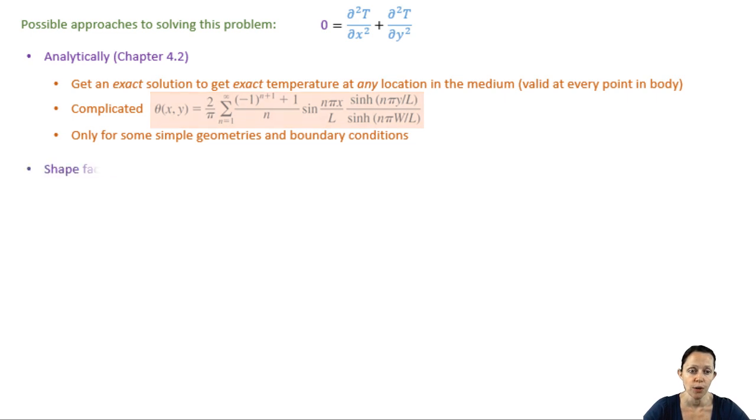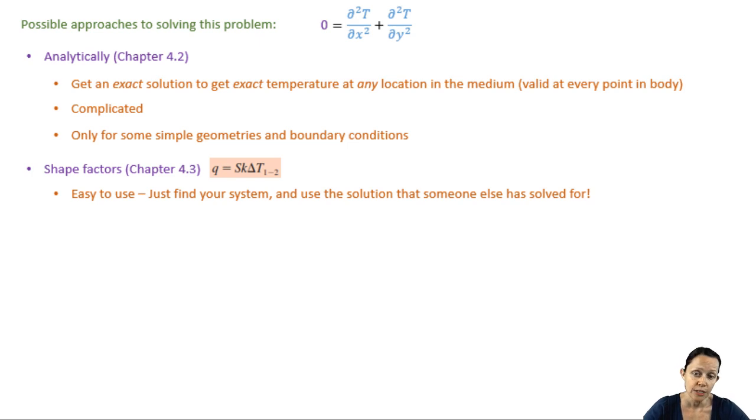Then we'll move on to shape factors. These are super simple to use. Essentially, if there is some common type of system or configuration, someone else has probably already solved for how to calculate for the heat transfer rate, which is related to the shape factor, the thermal conductivity of the body, and the temperature difference between the boundaries of the body. It won't really allow you to get the temperature distribution, but it's really handy as a quick and dirty way of finding out subparameters of interest for common configurations.